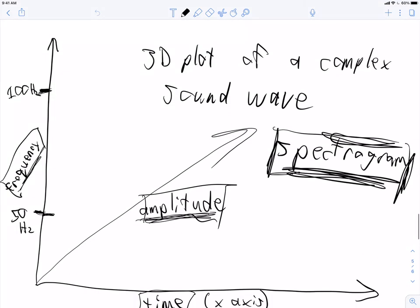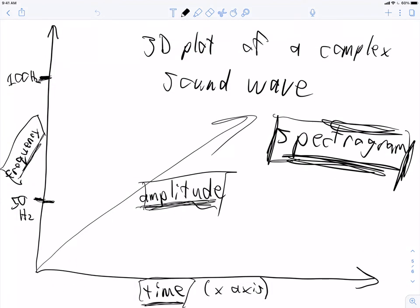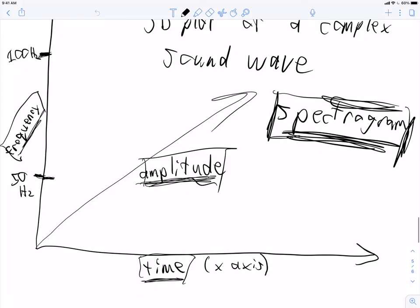And this is visualized in a three-dimensional plot of a complex sound wave called a spectrogram, where time is on the x-axis, frequency is on the y-axis, and amplitude is the effective z-axis. But it's represented in two dimensions as darkness. So dark points have a high amplitude, light points have a low amplitude. That's what we've covered previously. At this point, we're ready to start doing feature extraction.